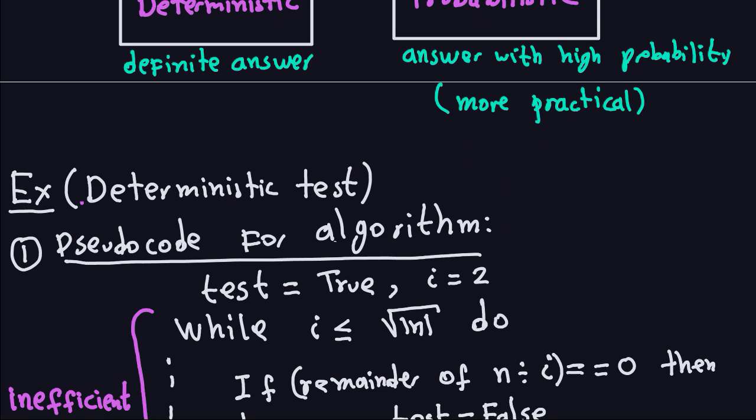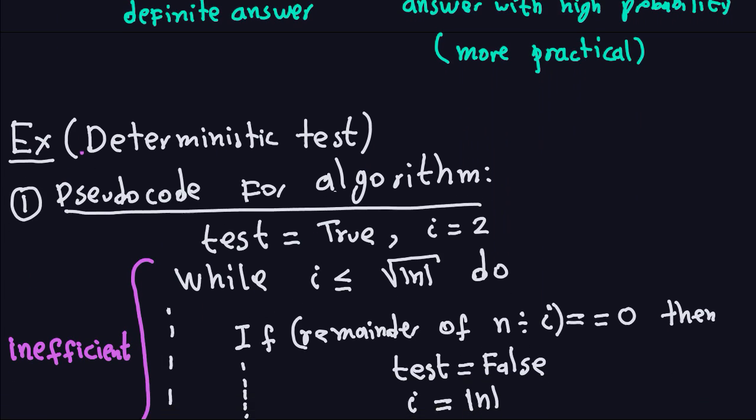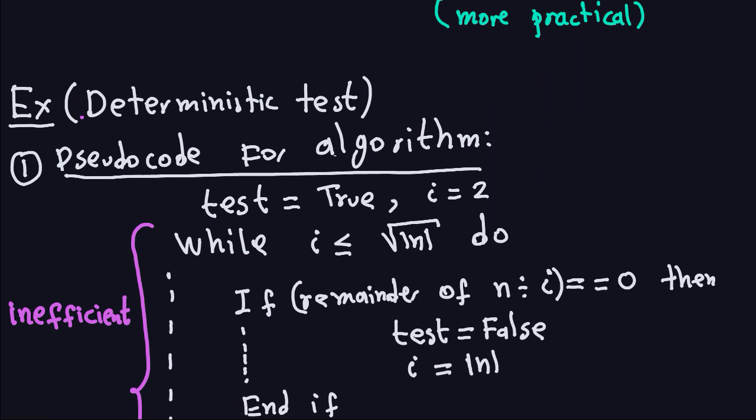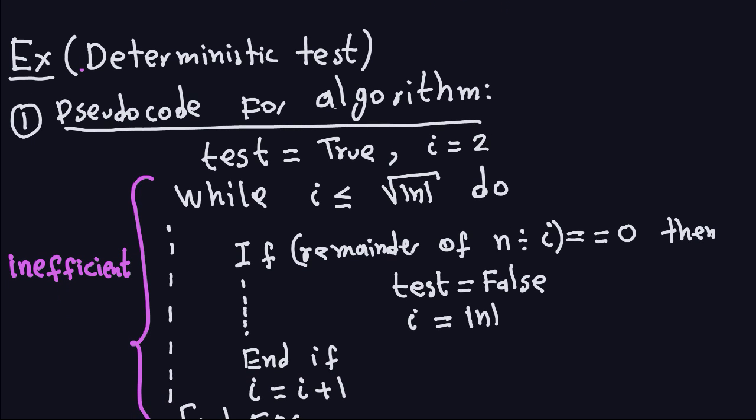Let's start with a couple of deterministic tests. The first one — I'll give you the pseudocode. This code is based on the fact that if you have a composite number (meaning it's not prime), there is at least one divisor less than the square root of the number. For example, if you want to check whether 35 is prime, you take the square root of 35 and check if there are any divisors between 1 and that square root.